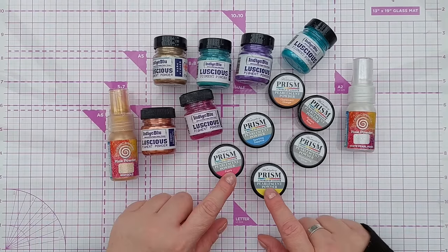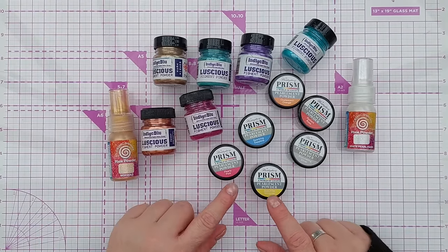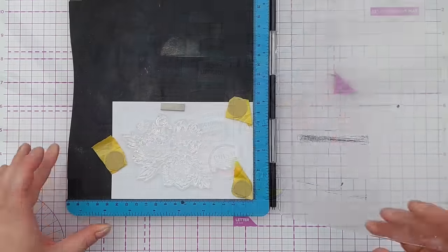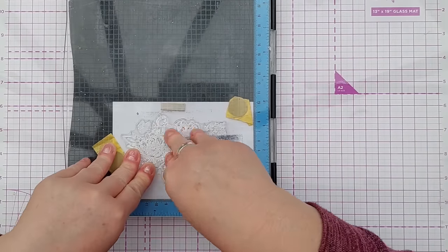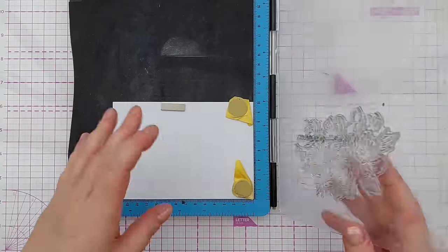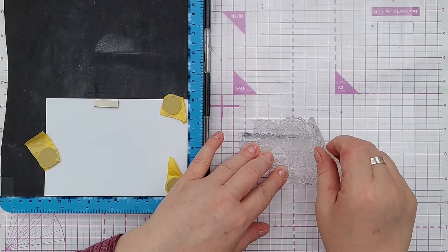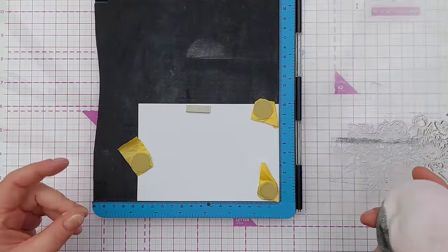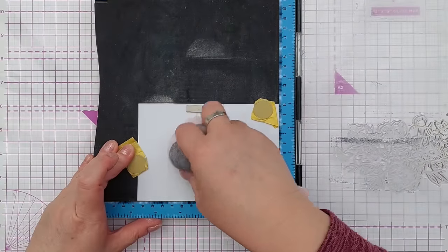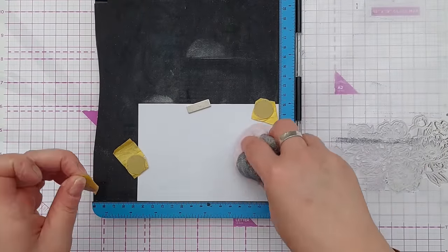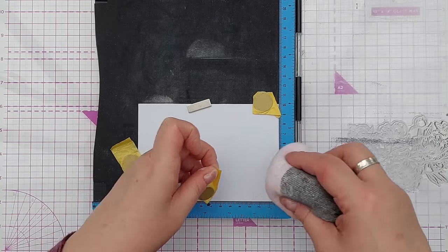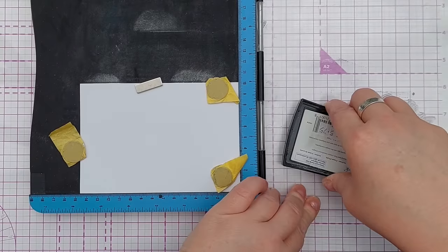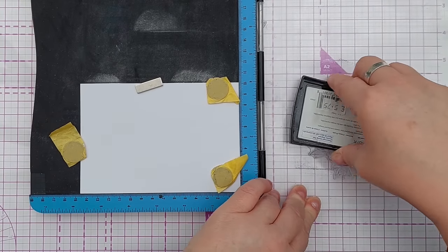So the first technique is somewhat similar to one of the stenciling techniques that I showed you in a previous episode, but this time instead of stenciling we're doing stamping. I'm not heat embossing right now, but I am going to treat my paper with some anti-static powder, and I'm going to ink up my stamp. I've got a floral butterfly stamp here.